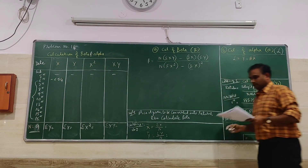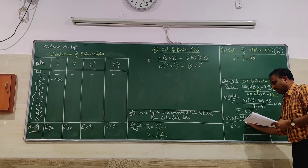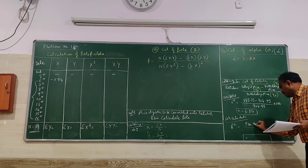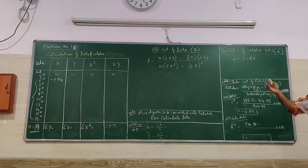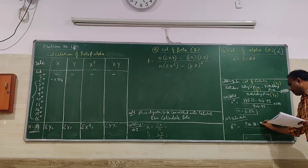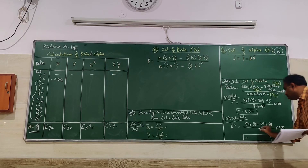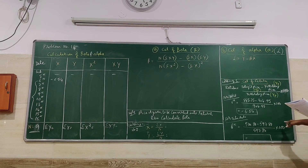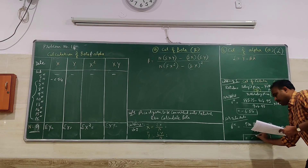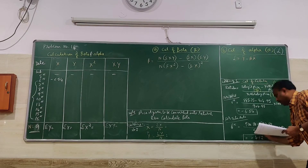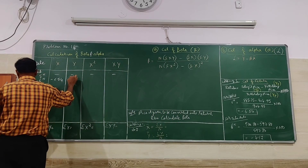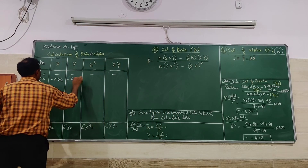Similarly for Tata Auto, we cannot calculate for 5th so we calculate for 6th. The 6th day price is 570.80; yesterday — 5th February — is 597.80. So 570.80 minus 597.80, divided by 597.80, multiplied by 100 gives minus 4.52. So the Y value for 6th February is minus 4.52.